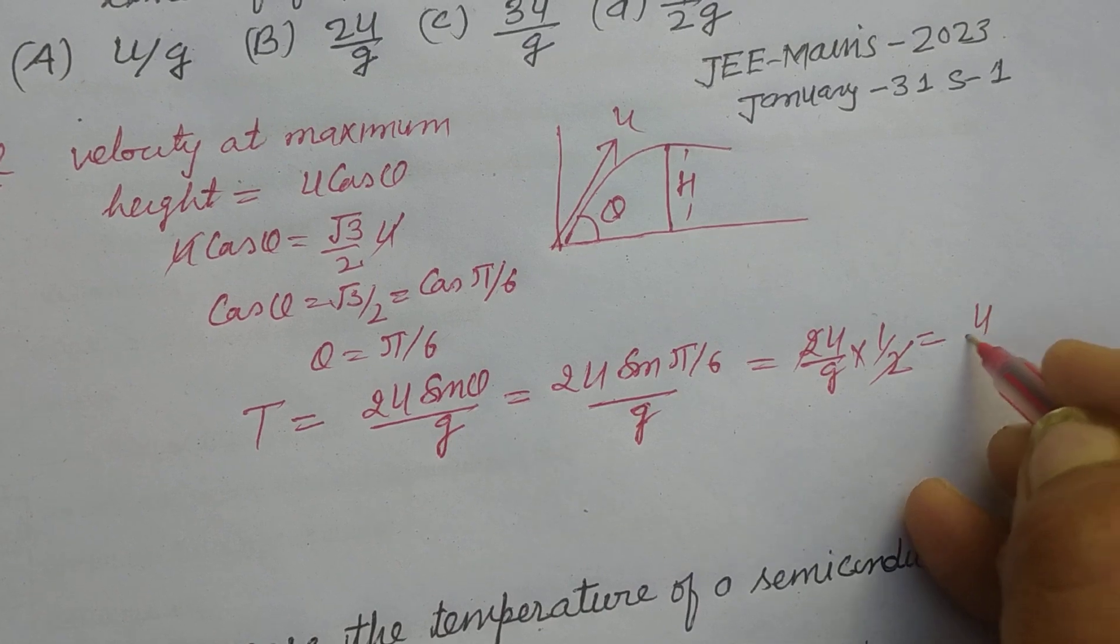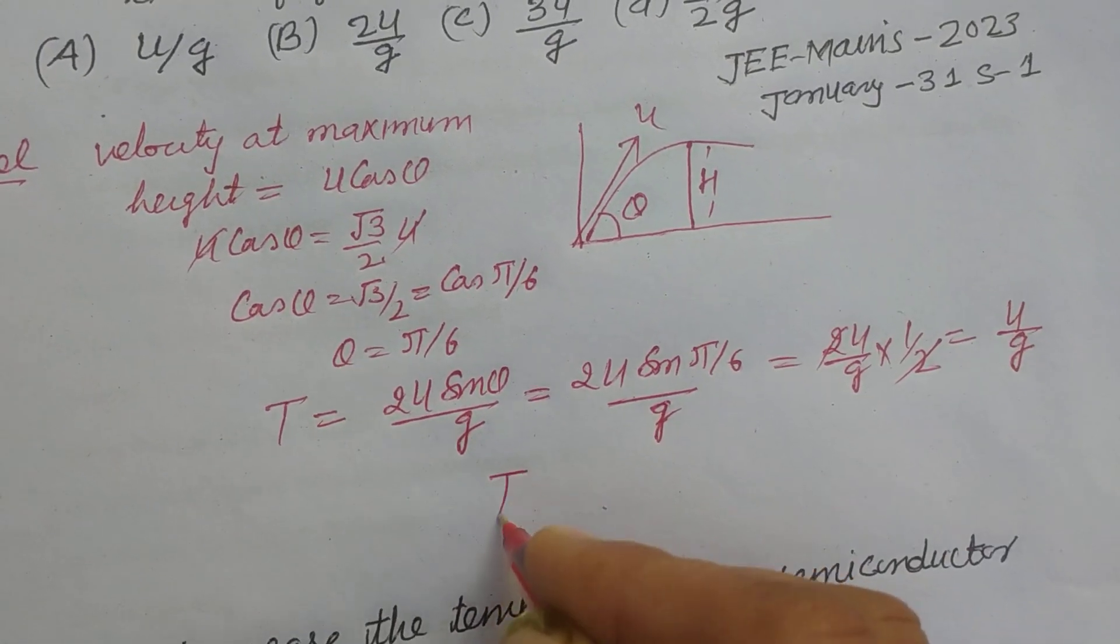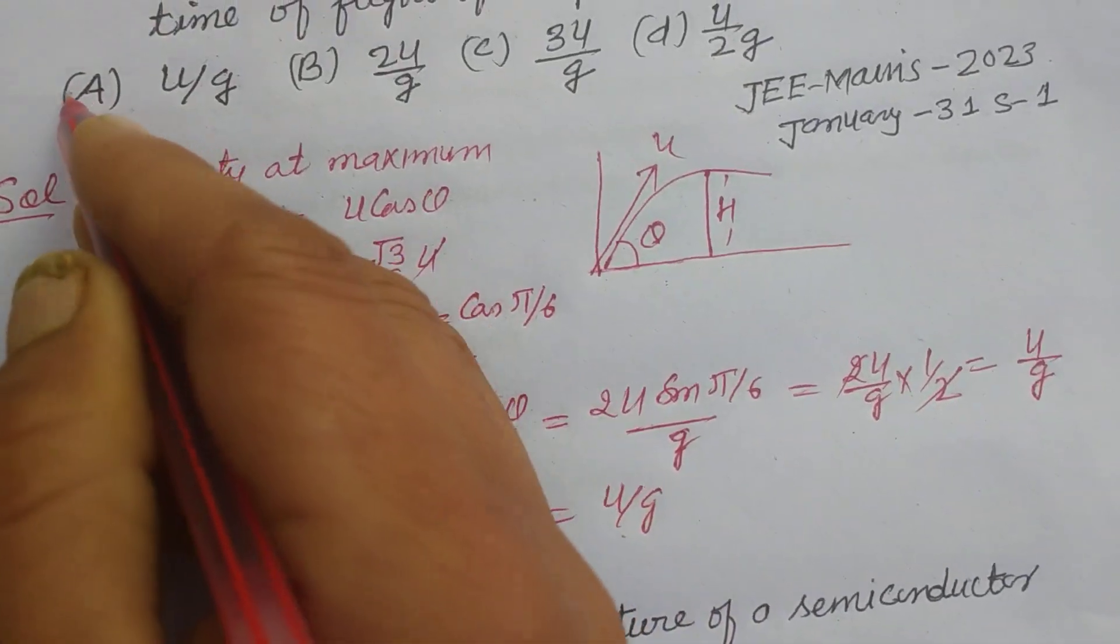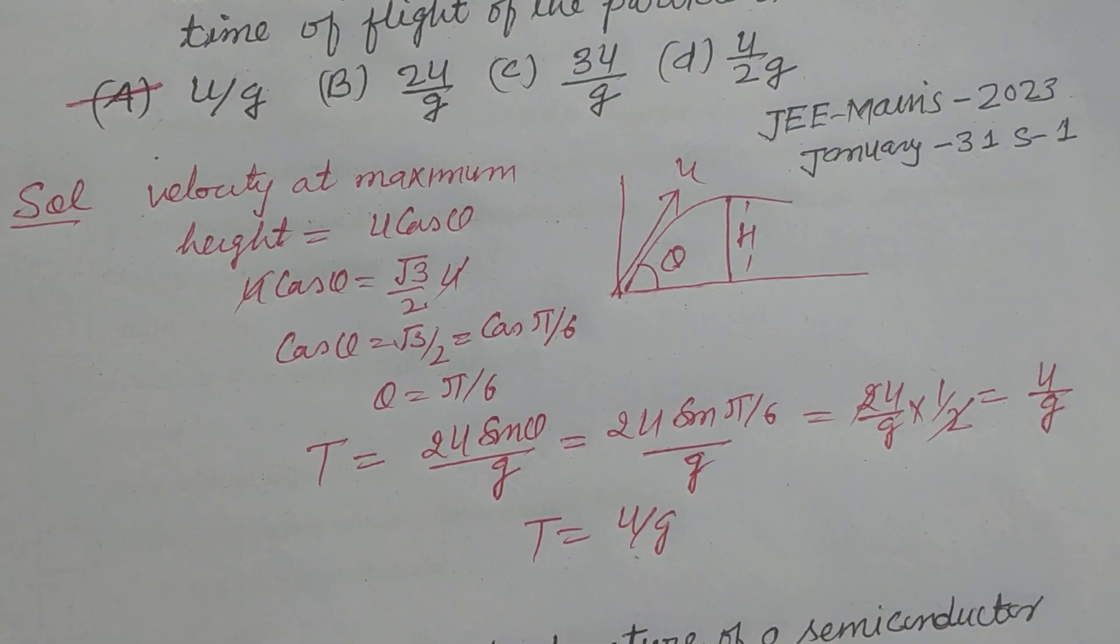So 2 cancels, we got u upon g. Therefore time of flight is u/g, which is found in option A of this question.